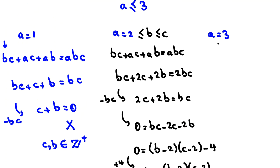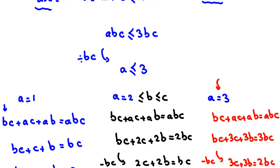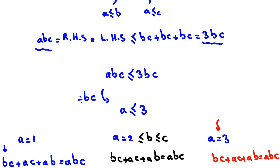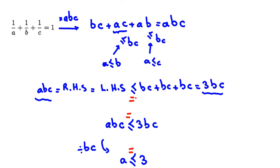Now we check the last case, A = 3. Substituting into BC + 3C + 3B = 3BC, then subtracting BC gives 3C + 3B = 2BC. Recall from our bounding argument that ABC ≤ 3BC with equality requiring each term to be equal to BC — meaning A = B = C. Since A = 3 and equality holds throughout, we conclude A = B = C = 3.